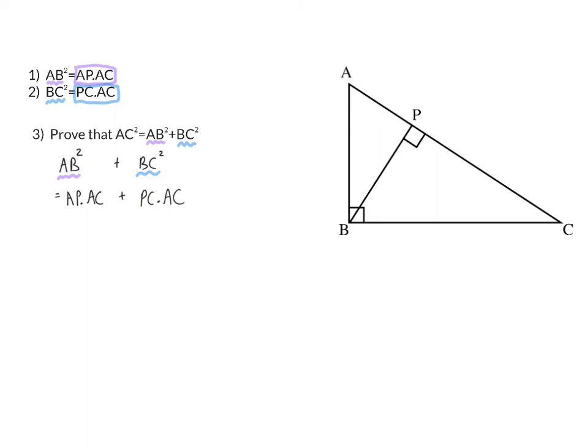If we now focus on the algebra, you will see that you have two terms and that AC is a common factor of these two terms. So I'm going to take out AC as a common factor, and then I'll be left with AP in my first term and PC in my second term.